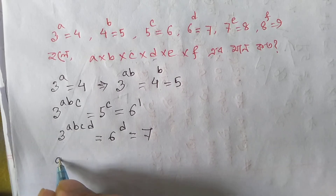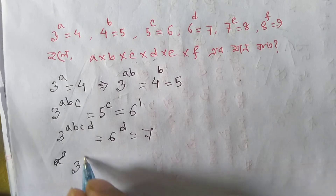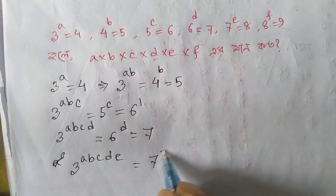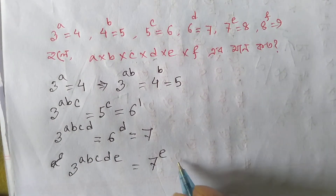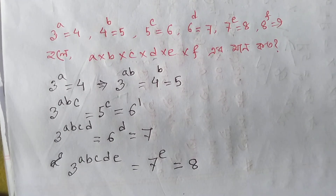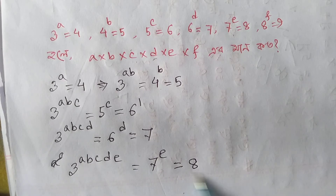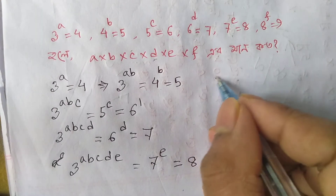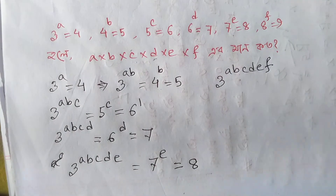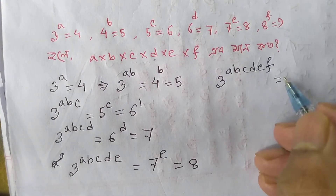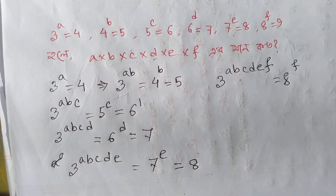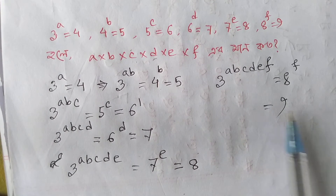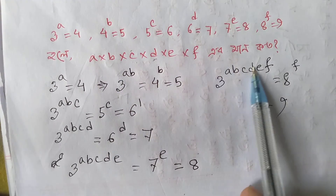So now we are going to do D and then we are going to do E. 3 to the power A·B·C·D·E. So now we are going to do 7 to the power E, which equals 8. And now we are going to do 8 to the power F. So 8 to the power A·B·C·D·E·F equals 9.